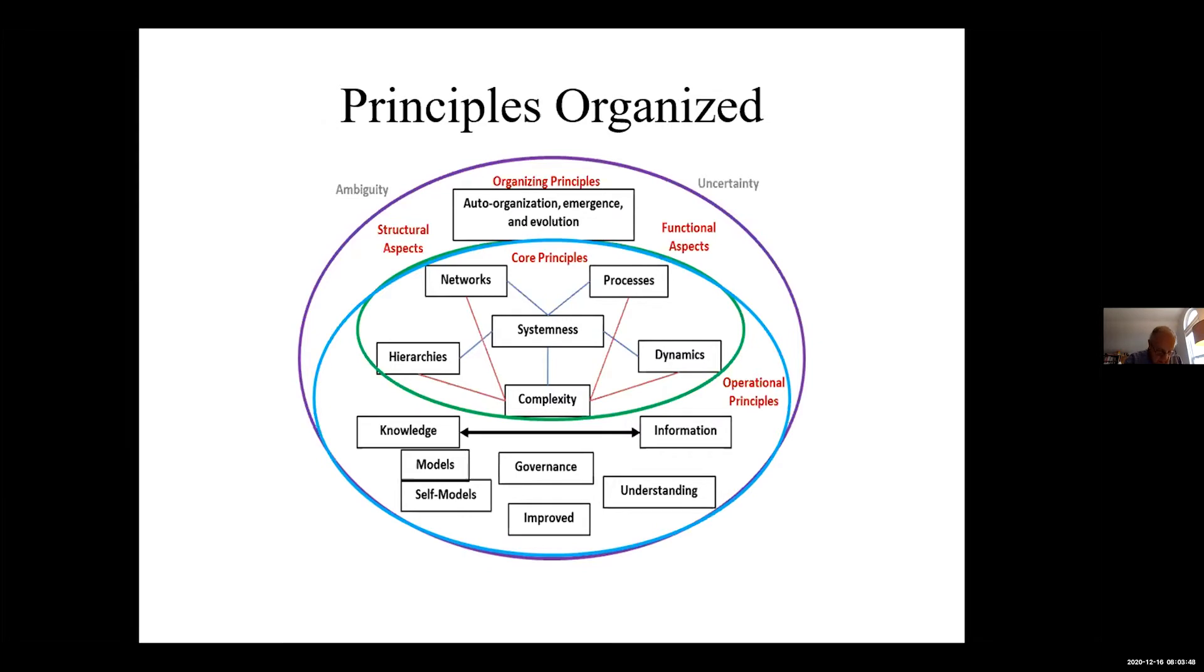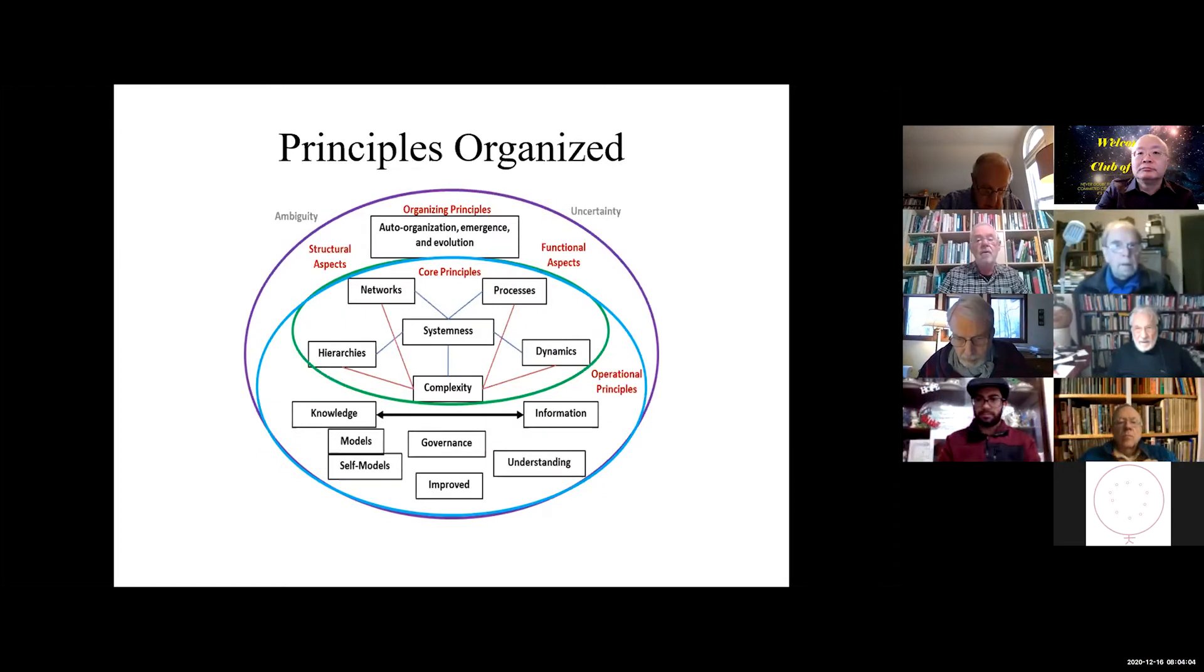This is something that's going to be in my new book. This organizes those principles in a way to display that there are certain core principles which are true of all systems, or can be found true of all systems. On the right hand side it says functional aspects and on the left hand side it says structural aspects, and then above all is the organizing principles which include what I call auto organization, emergence, and evolution.